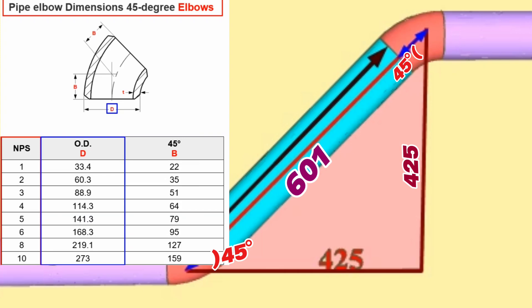The letters B written on the 45-degree elbow indicate the length of the center to end dimension of the 45-degree elbow and is shown in this column. Since the pipeline in our video is 6-inch, we will look at the row written as 6-inch in the NPS column. This row shows that 6-inch butt welded 45-degree elbows have an outside diameter of 168.3 millimeters and a center to end dimension of 95 millimeters.